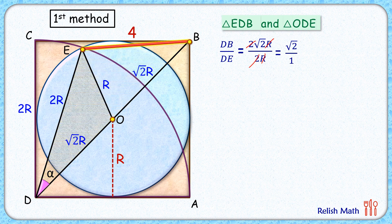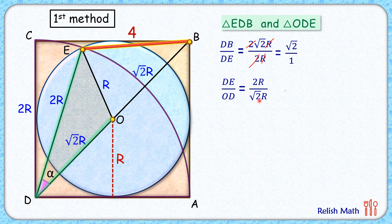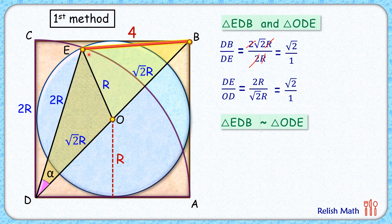In triangle ODE, the ratio of side DE to DO is 2r upon root 2r, which also simplifies to root 2 to 1. Both triangles have equal ratios of sides and the angle between them is equal, so the triangles are similar to each other. Therefore, triangle EDB is similar to triangle ODE.